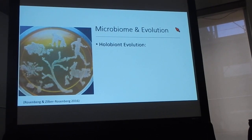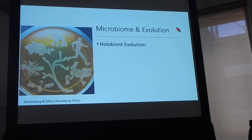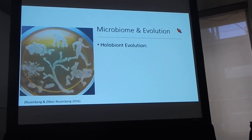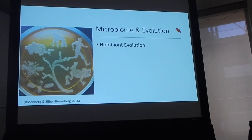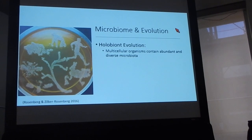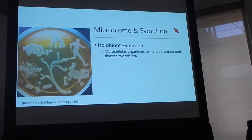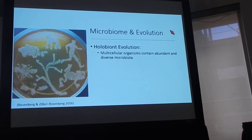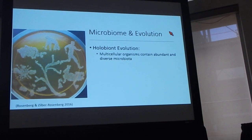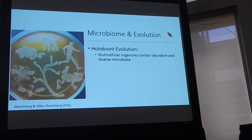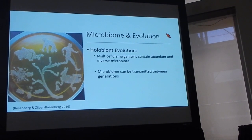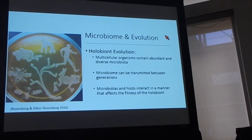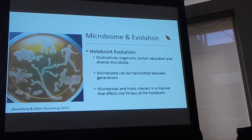Before we get into hellbenders, I'd like to talk first about holobiont evolution. The ability to characterize multiple microbiomes has allowed us to basically change our perspective on multicellular organism evolution. There is now a shift in looking at the evolution of multicellular organisms from the host being the unit of selection, to the host in its environment — meaning the unit of selection for the holobiont. This comes from the fact that multicellular organisms possess abundant and diverse microbial communities, the microbiome is transmitted between parents and offspring with high fidelity, and the microbiome provides fitness benefits to its host.